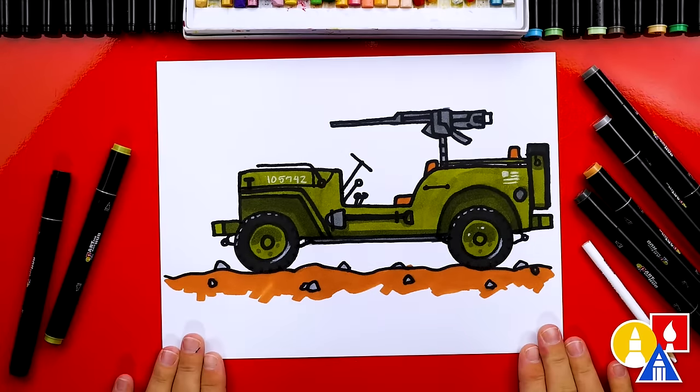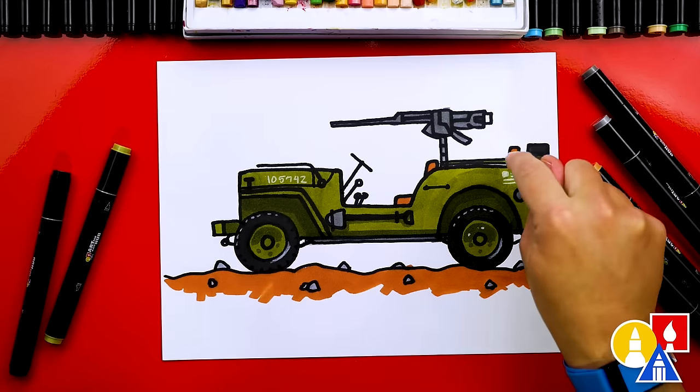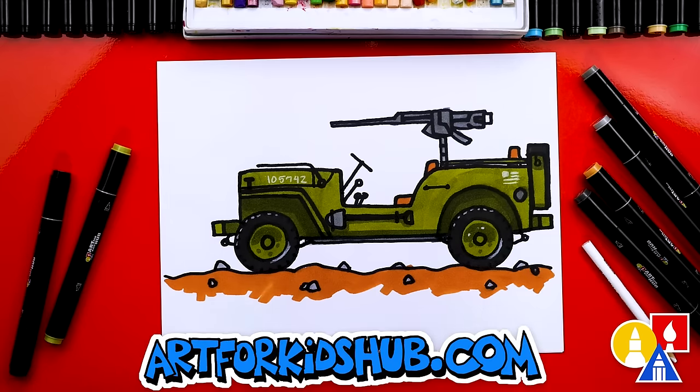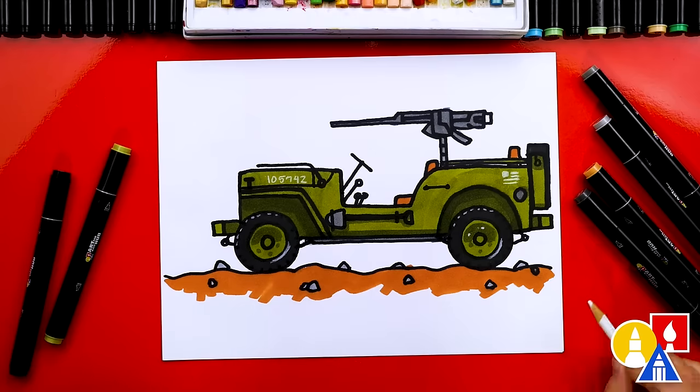We did it. We finished drawing and coloring our Army Jeep and it turned out really cool. I hope you'll take time to color in your drawings also. You can add even more things. I added a seat back here for extra soldiers. I even added numbers and even a flag. I added rocks down here at the bottom. And I also used a white colored pencil to add highlights on the tires.